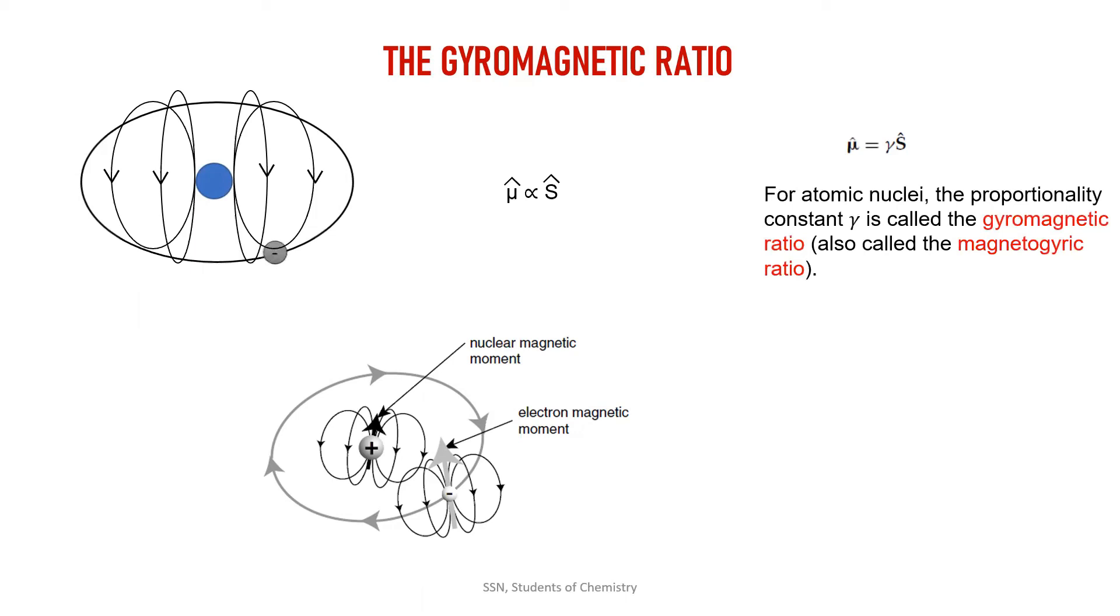This proportionality constant is nothing but gamma, which is our gyromagnetic ratio, also known as magnetogyric ratio. This gyromagnetic ratio has a unit of radians second inverse tesla inverse. It has different values for different nucleus. Different nucleus will have different gyromagnetic ratio values.